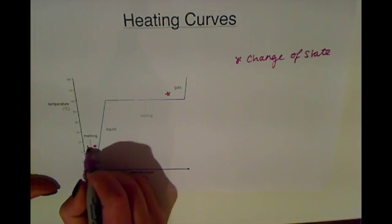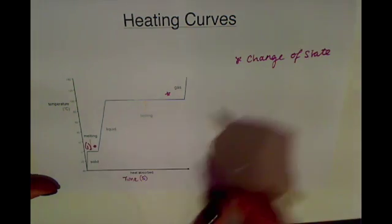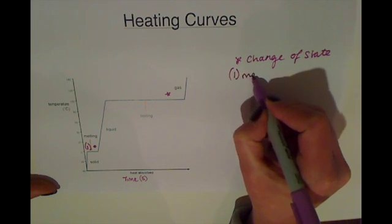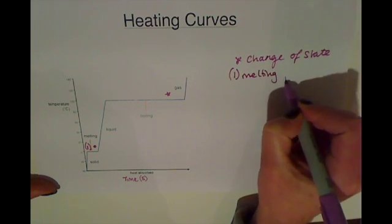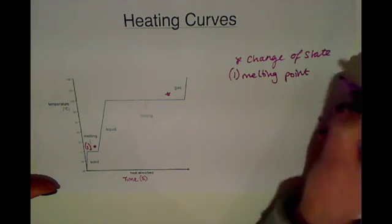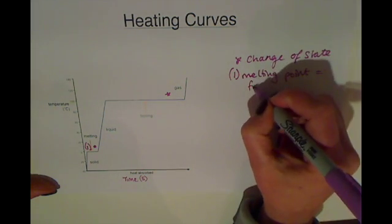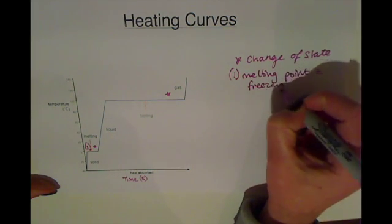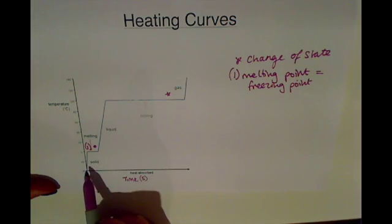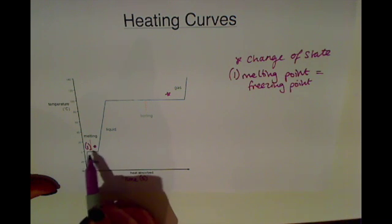So down here if we label this one, this is the melting point, which is also the same as the freezing point because it depends which way you read the graph. If you're heating something up it will go from a solid to a liquid and have the melting point.